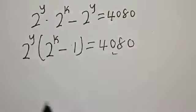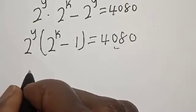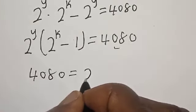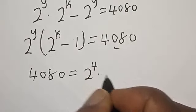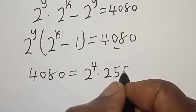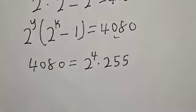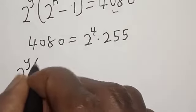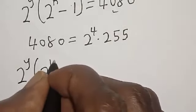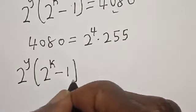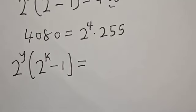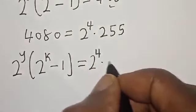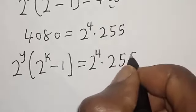Now let's work with 4080. We note that 4080 can be written as 2 raised to power 4 multiplied by 255. So we have: 2 raised to power y times (2 raised to power k minus 1) is equal to 2 raised to power 4 multiplied by 255.